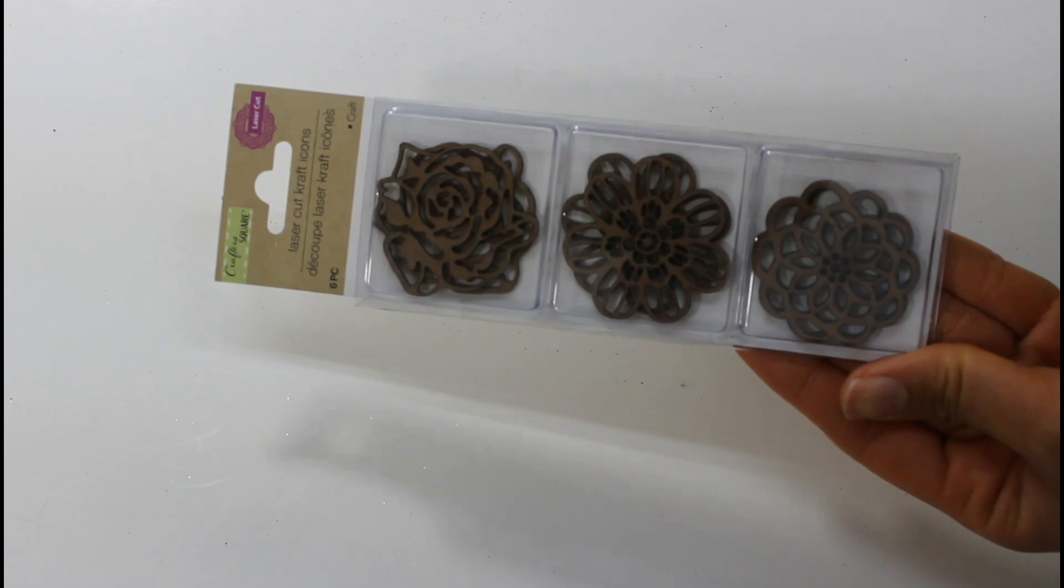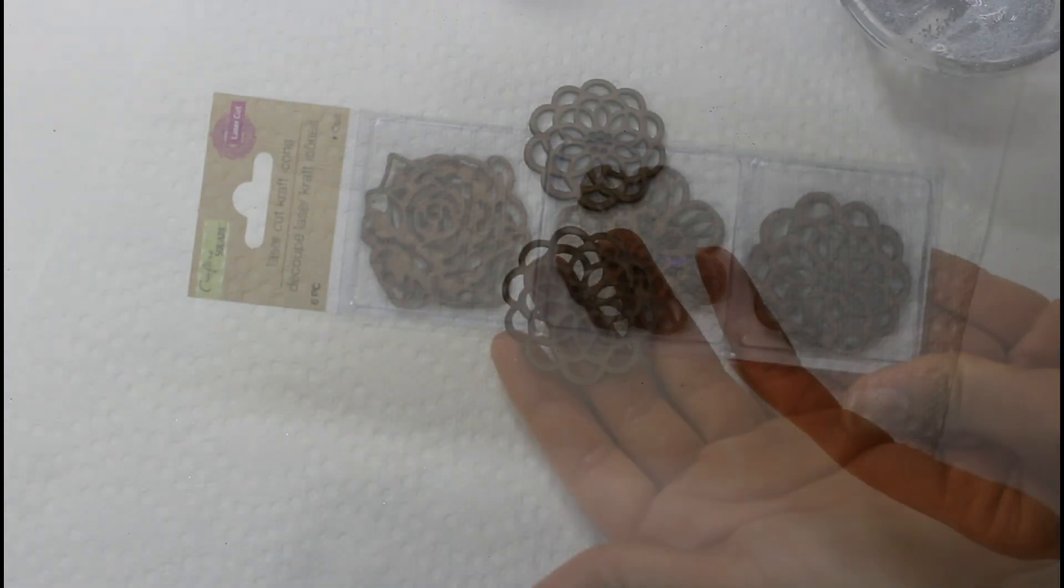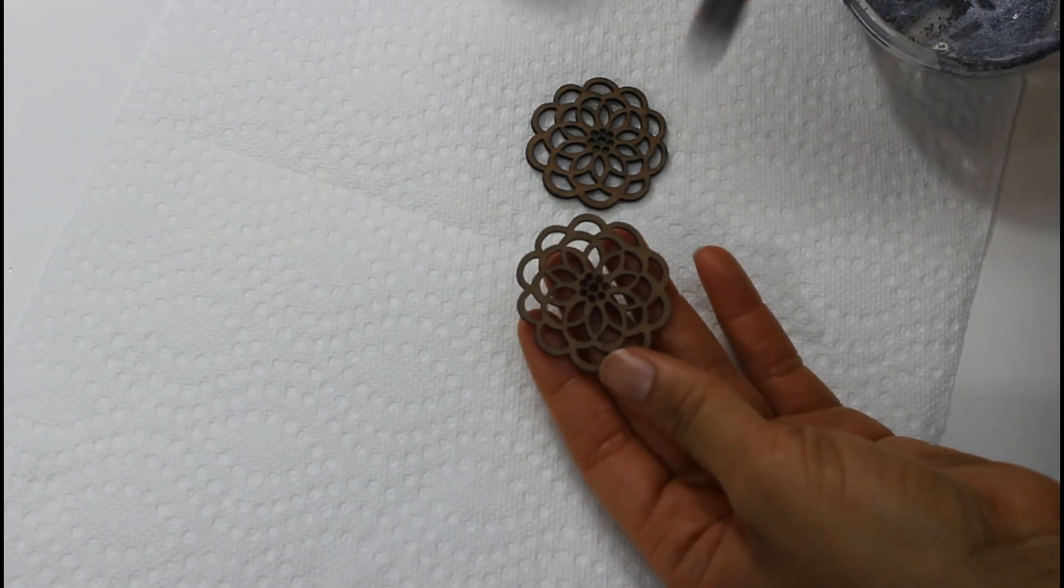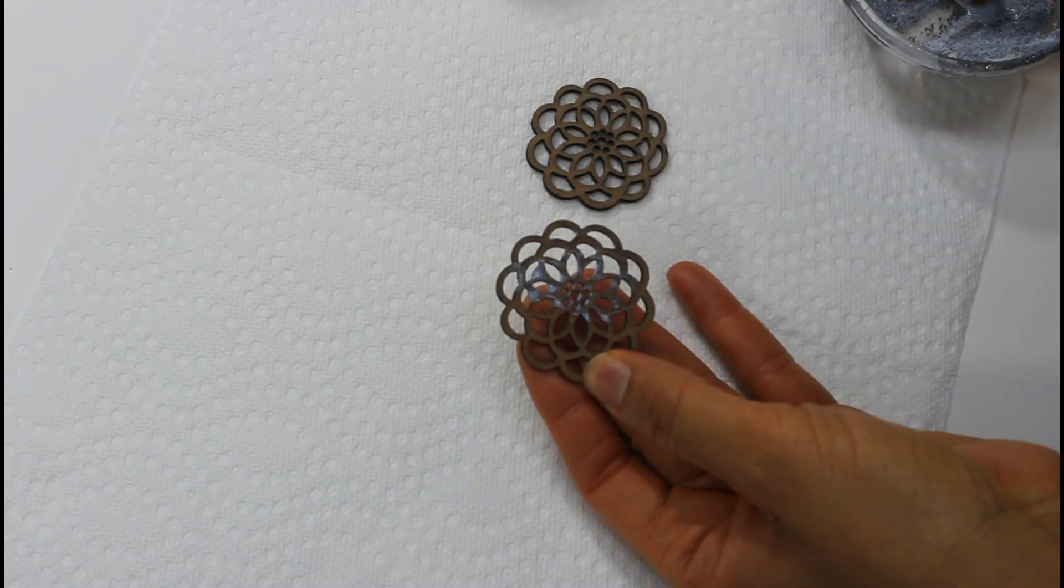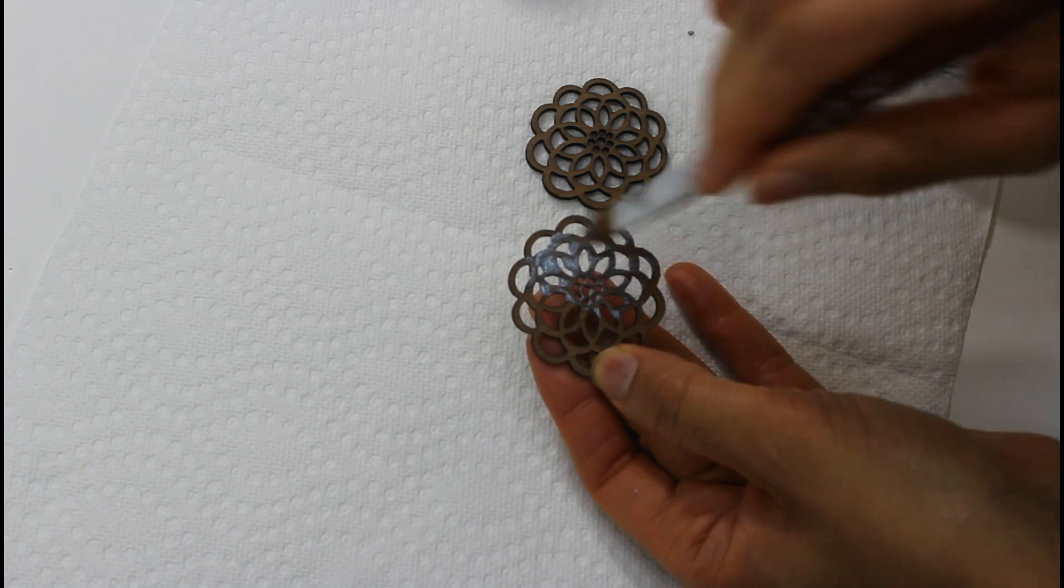Next, I'll be using these wooden flowers from the Dollar Tree. Right here, you just see me adding that mod podge and fine glitter mixture that I had leftover. And then, I'll be shaking on some more glitter to give it some more coverage.